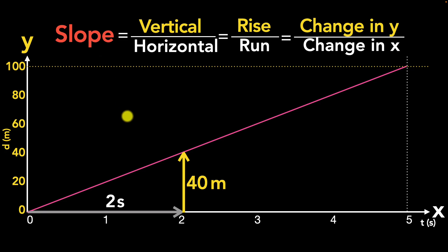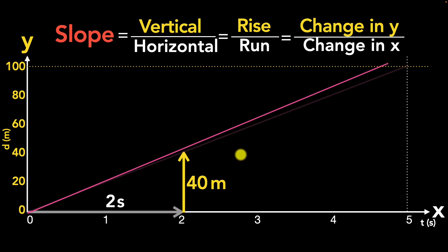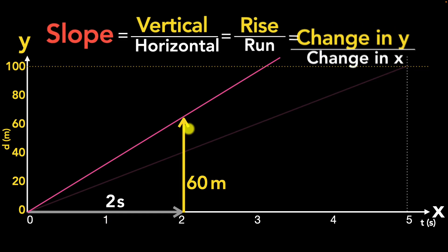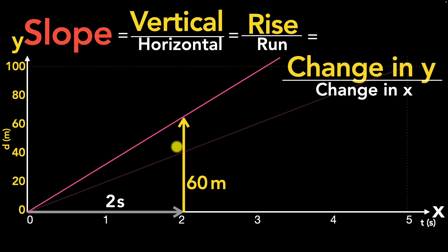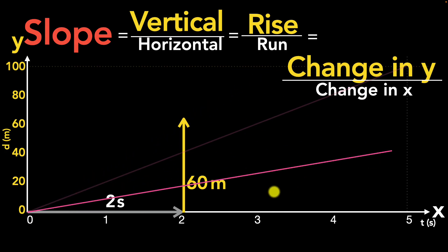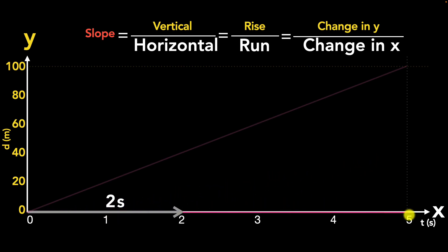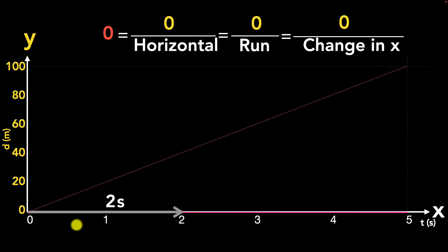Why is it called the slope? Because it literally tells you how sloping or how steep the graph is. If the graph is steeper, the slope is much higher — you get a much higher vertical for the same horizontal — meaning that object is traveling faster. If the graph is less steep, you get a much smaller slope, meaning the object is traveling slower. And if the graph is completely horizontal, the vertical goes to zero, the slope is zero, the speed is zero — the object is at rest. Just by looking at the slope, you can figure out the speed of the object.